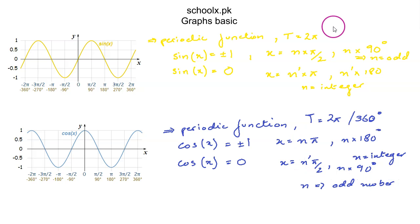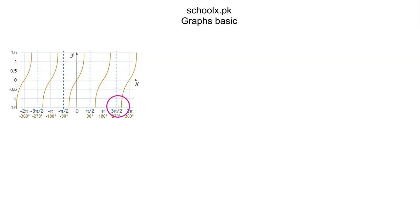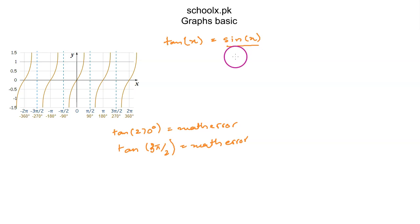Now moving on to the graph of tangent. You can see that this graph of tangent is not defined at certain lines — for example, tangent of 270 degrees is undefined. If you enter tangent of 270 in your calculator you will get a math error, or if your calculator is in radian mode, tan of 3π/2 will give a math error. This is because tangent is defined as tan x equals sin x over cos x, which is an identity you will learn later in this chapter.